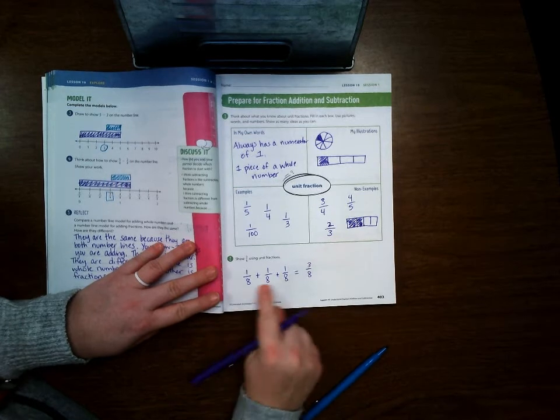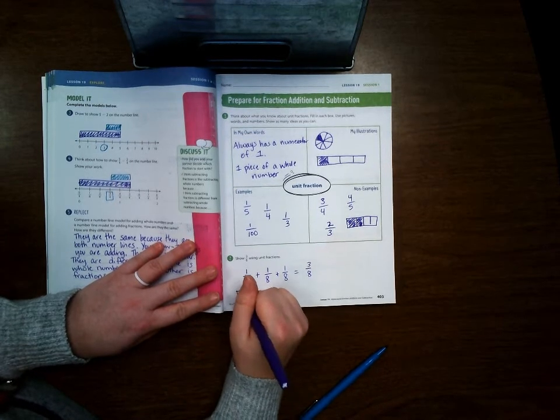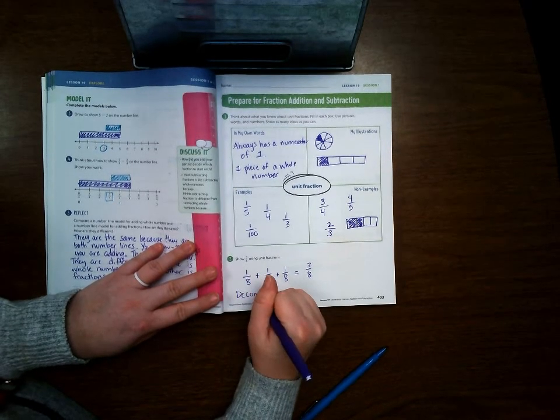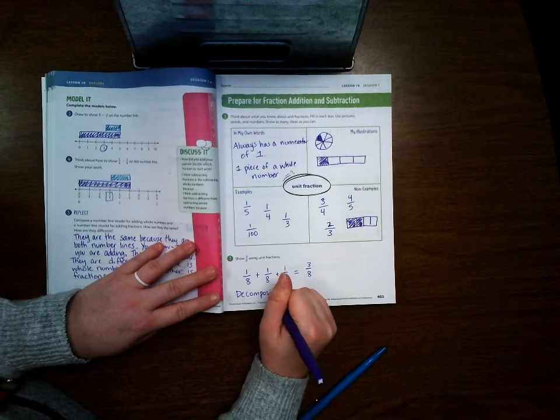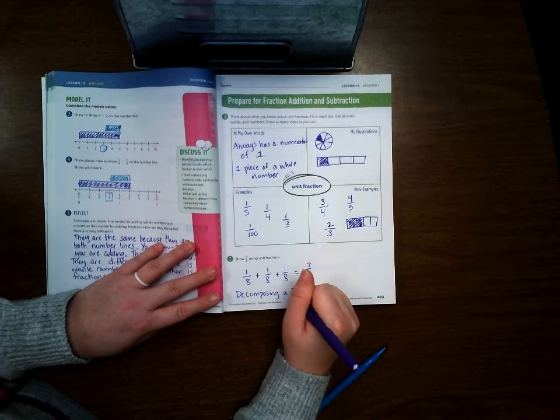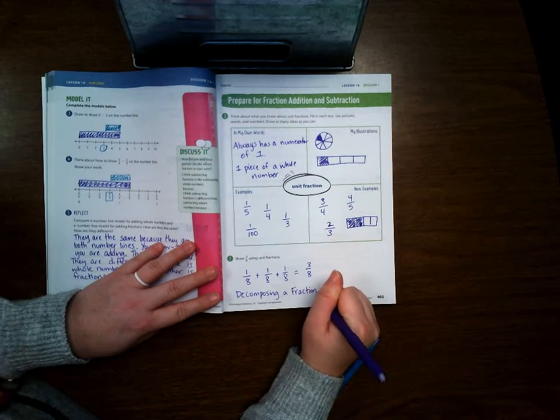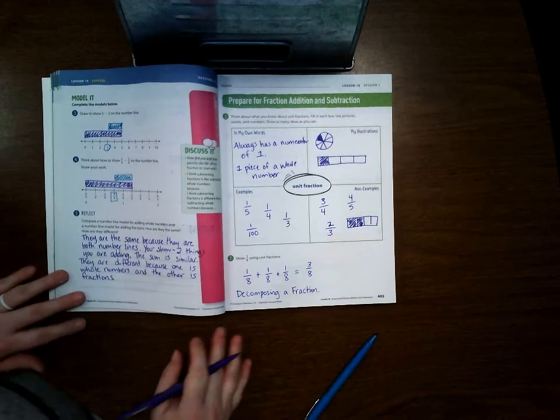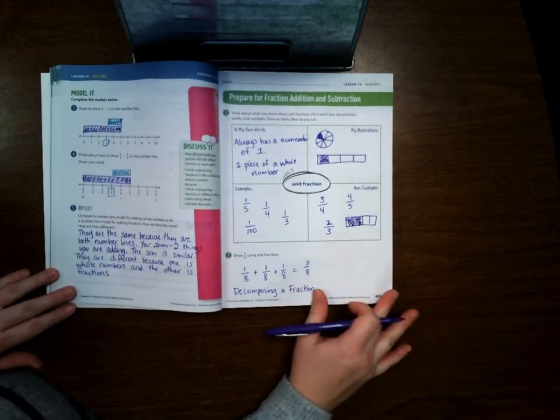1/8 plus 1/8 plus 1/8, because if you add those three 1/8s together you would get 3/8. So this is decomposing a fraction. Okay, let's go ahead and turn to page 404.